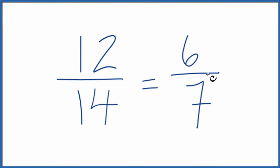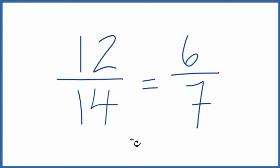These are equivalent. If you divide 6 by 7 or 12 by 14, you're going to get the same decimal answer. It's just that we've simplified or reduced 12 fourteenths down to the fraction 6 sevenths. This is Dr. B.